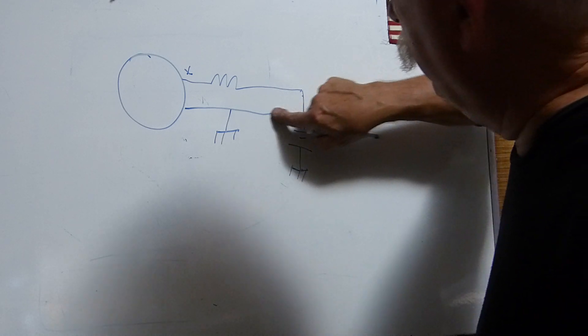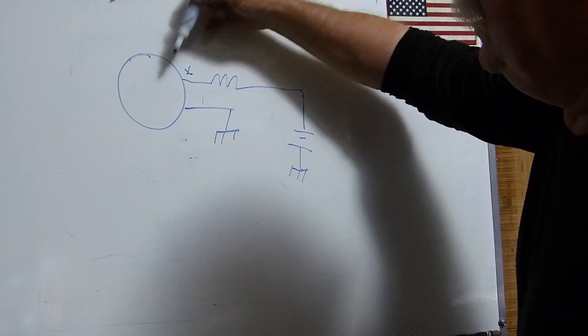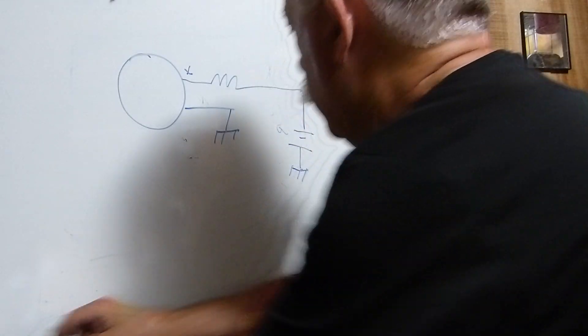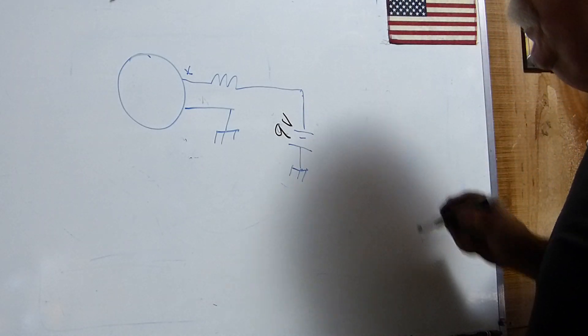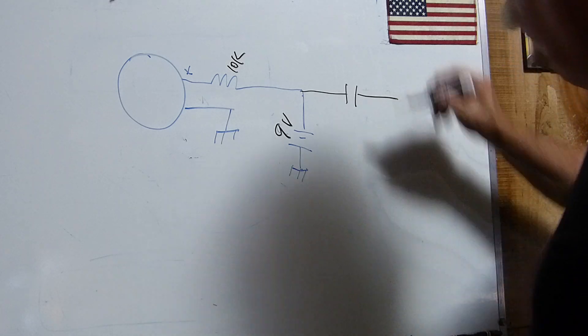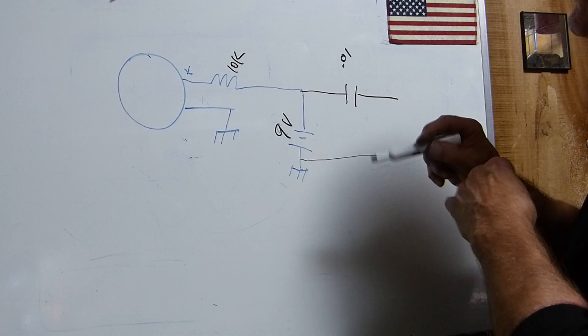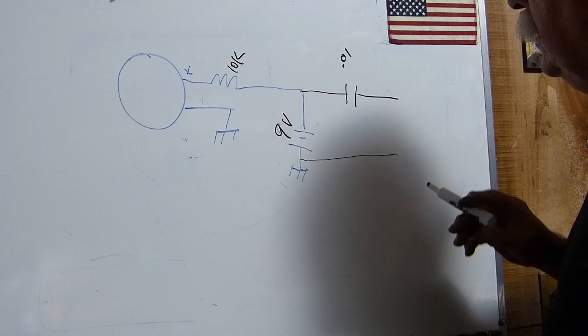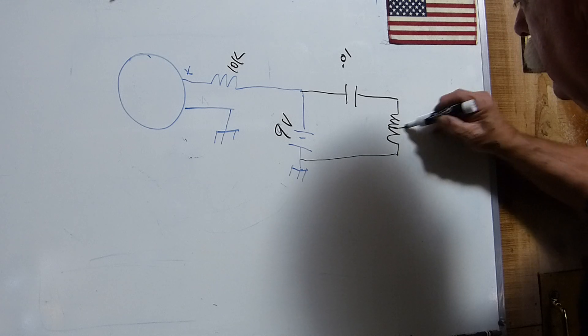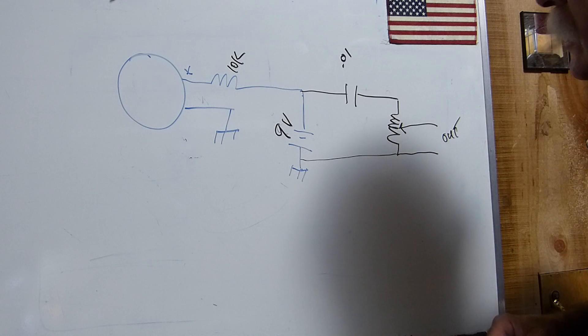Now you can see we've got this condenser electret microphone with the FET built into it. You have to have a battery - I'm using a nine volt. Then off of there you have to come off with a capacitor. You can use just about anything you want, probably something like 0.01, 10 nanofarads. Here's the output. It works great.